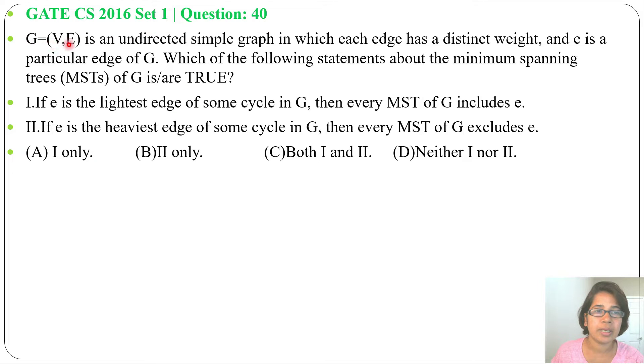G equals to V, E, V for vertices, E for edges, is an undirected simple graph in which each edge has a distinct weight and E is a particular edge of G. Which of the following statement about minimum spanning tree MST of G is or are true? Two statements are given and four options are given.